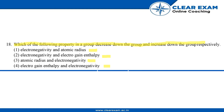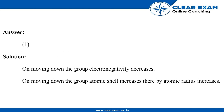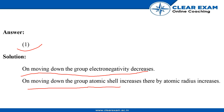Option one is correct. When moving down the group, electronegativity decreases. Moving down the group, atomic shells increase, thereby atomic radius increases.